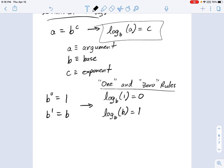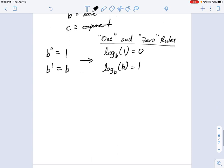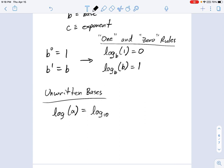There are unwritten bases. Sometimes you'll see a log without that b written under it. It'll just say log of argument, but it doesn't say what the b is. And when you see something like this, it just means log base 10 of a. The reason for that is just because 10 is a very common exponent, so we don't write it.